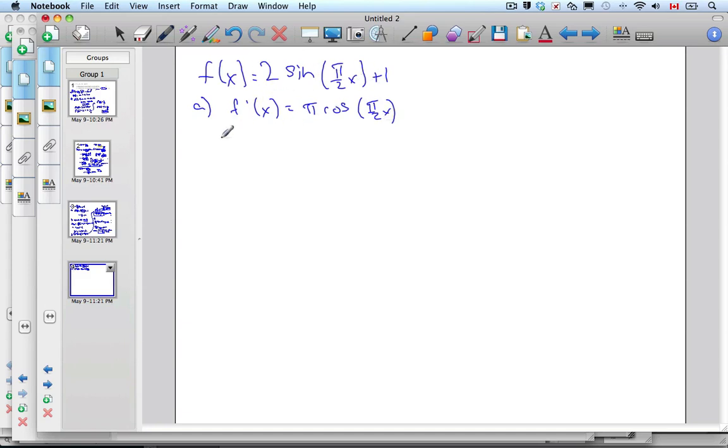So in order to do that, well let's take our scenario here and we're going to go f prime of x. I have 2, derivative of sine is cosine, pi by 2x. Chain rule says the derivative of the inside function is pi by 2 plus 0. Well, that cancels with this and I'm left with pi cosine pi by 2x.